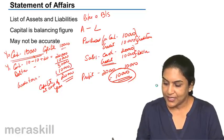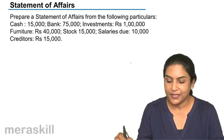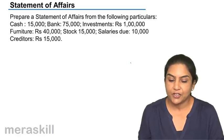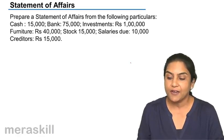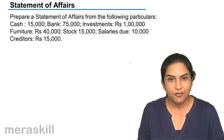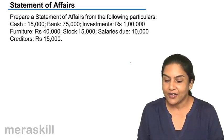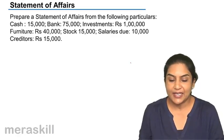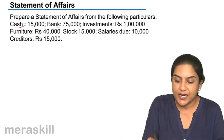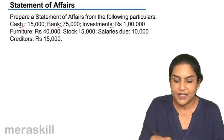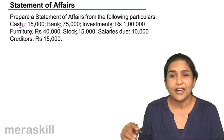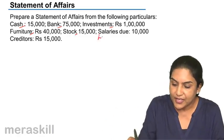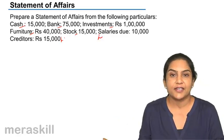Let us see how to prepare a statement of affairs from the following particulars: cash balance 15,000; bank 75,000; investments 1 lakh; furniture 40,000; stock 15,000; salaries due 10,000; creditors 15,000. Cash, bank, investments, furniture, and stock are assets. Salary due is a liability because it is payable, and creditors is also a liability.